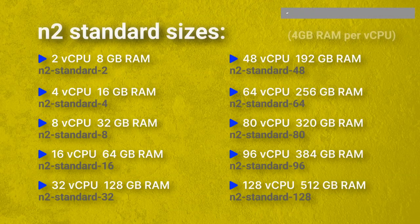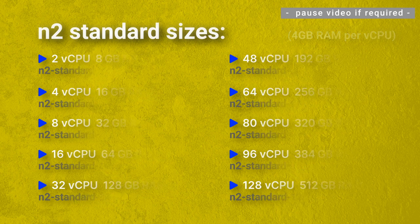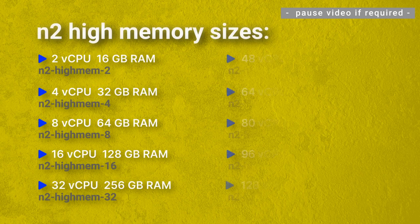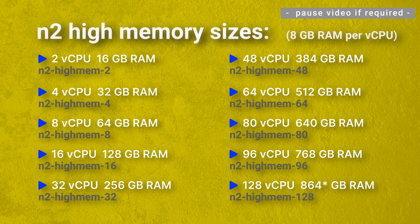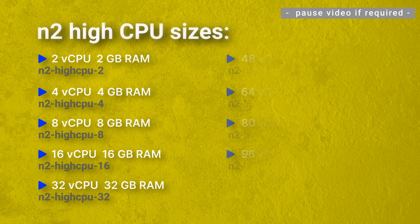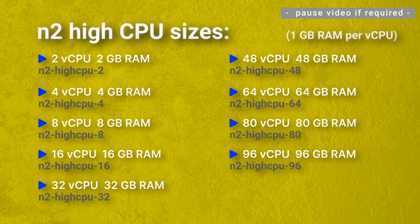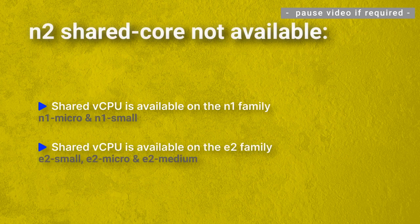N2 standard sizes include 4GB of RAM per vCPU, N2 high memory sizes include 8GB of RAM per vCPU, and N2 high CPU sizes include 1GB of RAM per vCPU. N2 shared core machines are not available; alternatives are N1 micro, N1 small, E2 small, E2 micro, and E2 medium.